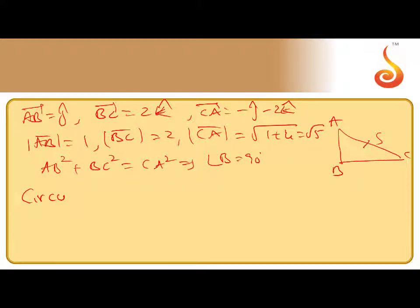Circumcenter equals the midpoint of hypotenuse AC. That is how to calculate midpoint, you know that: OA plus OC divided by 2.